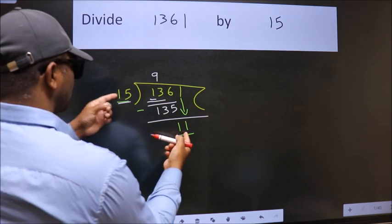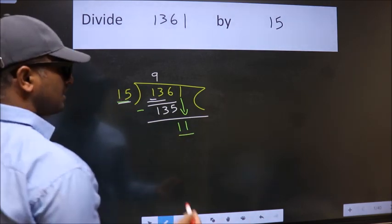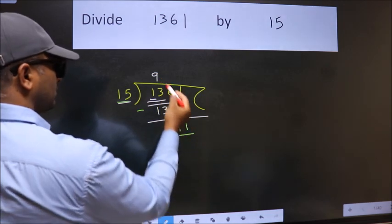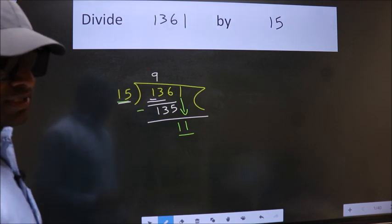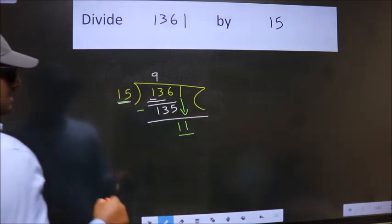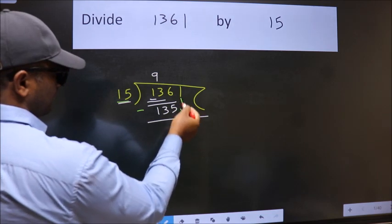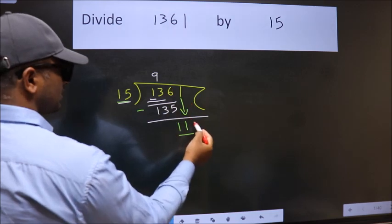11 is smaller than 15. So what many do is, they directly put dot, take 0, which is wrong. Why is it wrong? Because just now you brought this number down. And in the same step, you want to put dot, take 0, which is wrong.